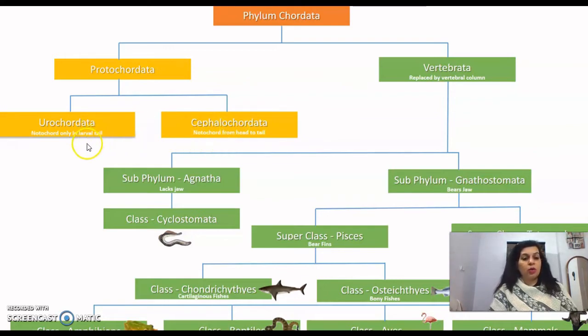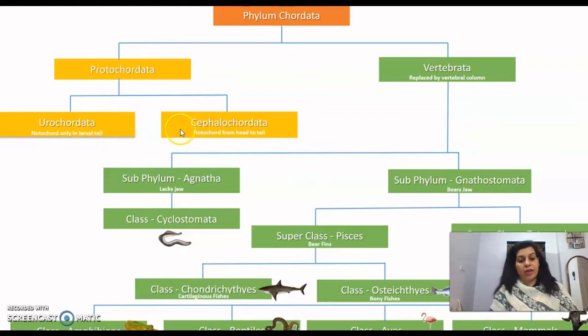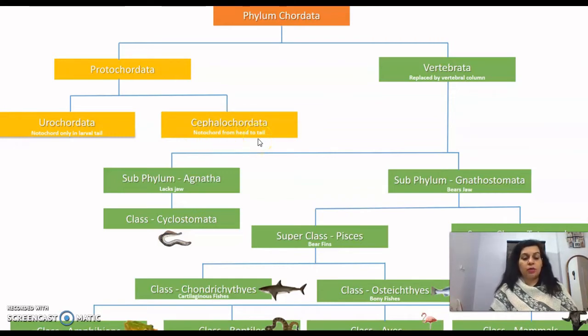Protochordates are of two types: Urochordata and Cephalochordata. In Urochordata, the notochord is present only in the larval tail. Whereas in Cephalochordata, the notochord is present from head to tail. This is the key difference between the two groups.